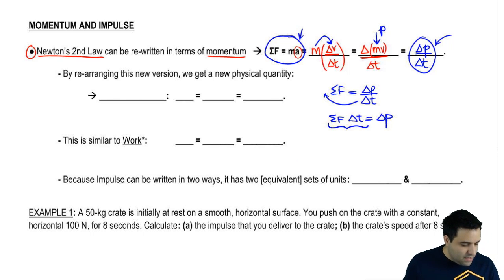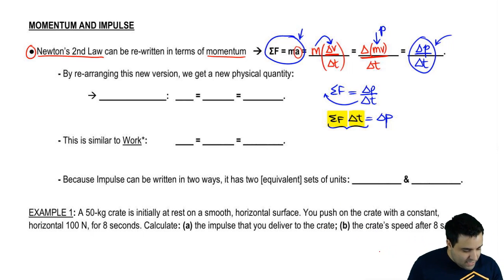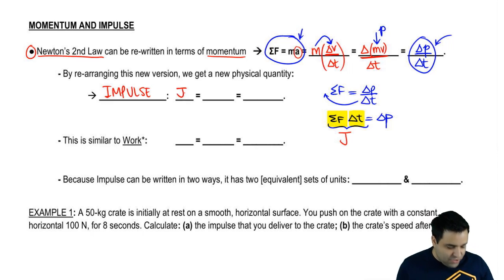This thing here equals the change in momentum, and we're going to give it a name. When you apply a force on something over a certain amount of time, there's a box, you push it for five seconds, that is called impulse. And it's given by the letter J. So the new physical quantity we're talking about is impulse, which is given by the letter J. Why J? I don't know. I suspect it's because they had already assigned i to something else. I is moment of inertia. The next letter is J.